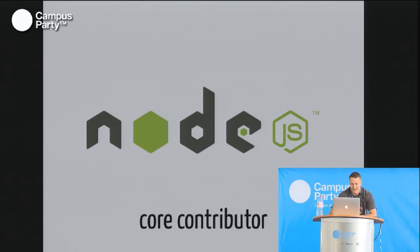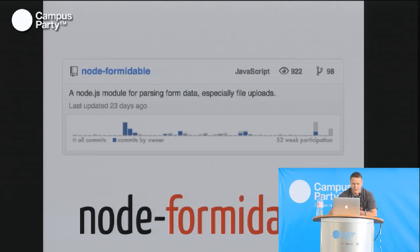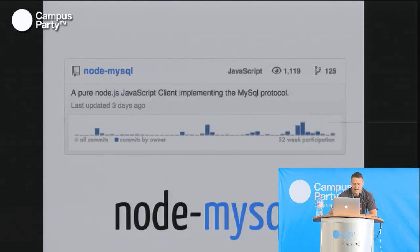If I had known how much work that would have been, I may not have gone down that route. But here I am, and it worked out all right. We're doing well. Nowadays I'm not doing so much on the Node core anymore, but I'm still writing Node modules. Probably the two you would see if you're going to do Node development are Node Formidable, for handling file uploads, and Node MySQL, a JavaScript implementation of the MySQL protocol.